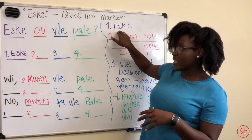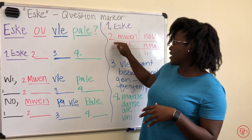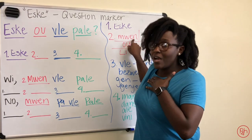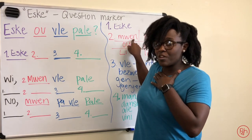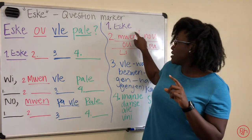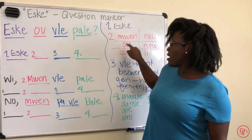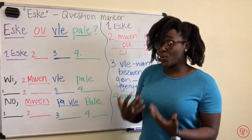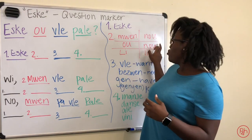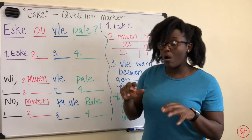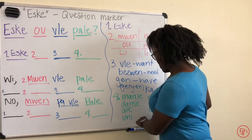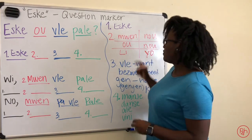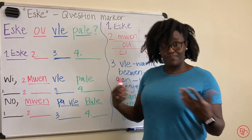Let's mix it up. In our formula, we begin with est-ce que. After that, you say mwen — which is I, not mwen. The i-n is an 'eh' sound: mwen. Ou is you, li is he, she, or it. Nu is we, nu is also you all. And then yo — that should be y-o. Yo is the plural of li and means they.